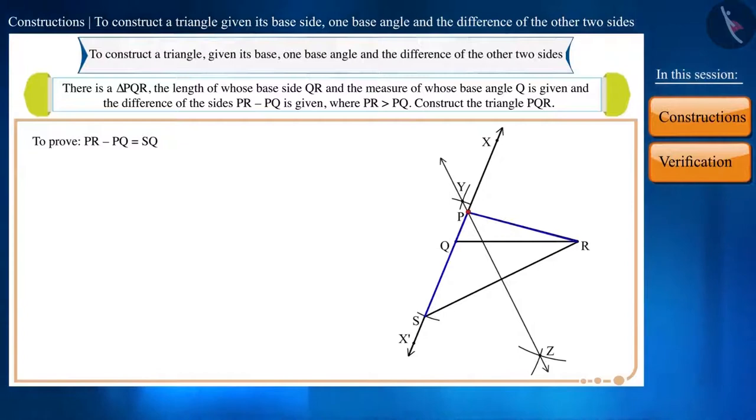We see that point P is equidistant from points S and R because this point P is located on the bisector of the line segment SR. Therefore, PS will be equal to PR. Let's call this equation as equation 1. And the line segment PS is formed by joining two line segments PQ and SQ. So PS equals PQ plus SQ. We can write it like this as well.